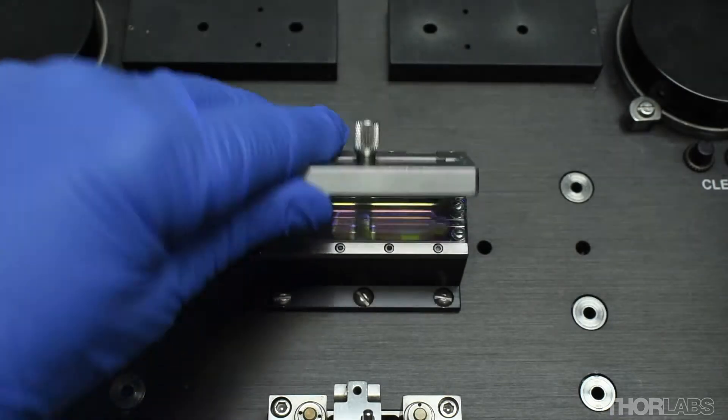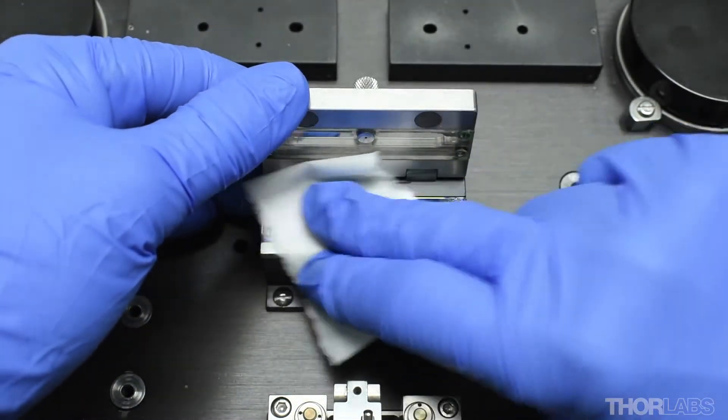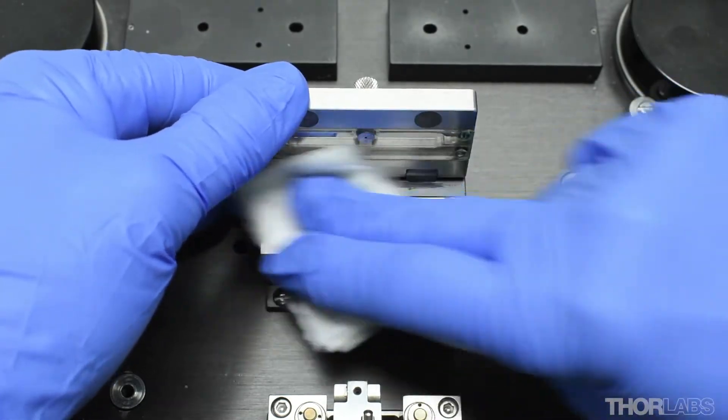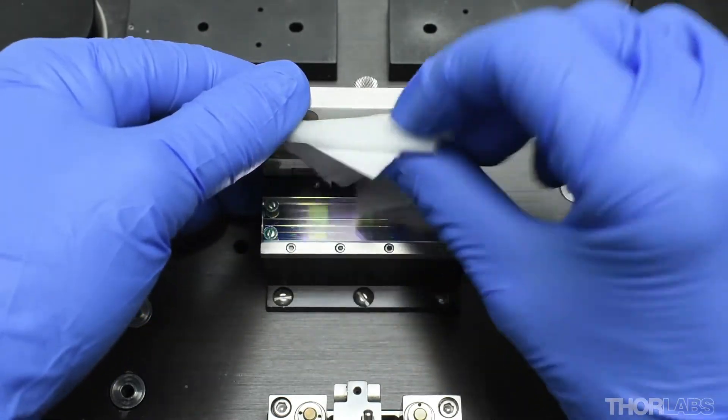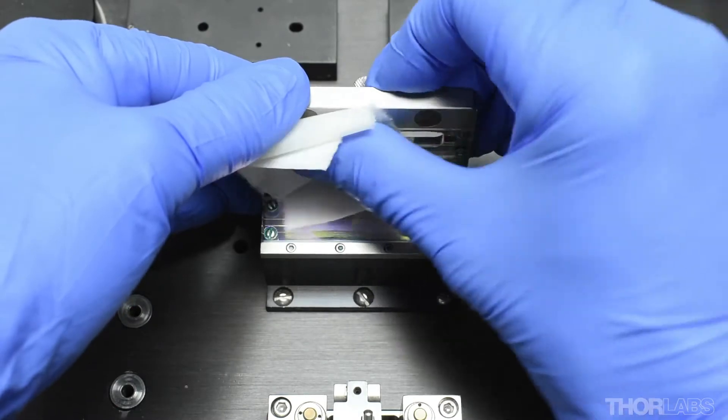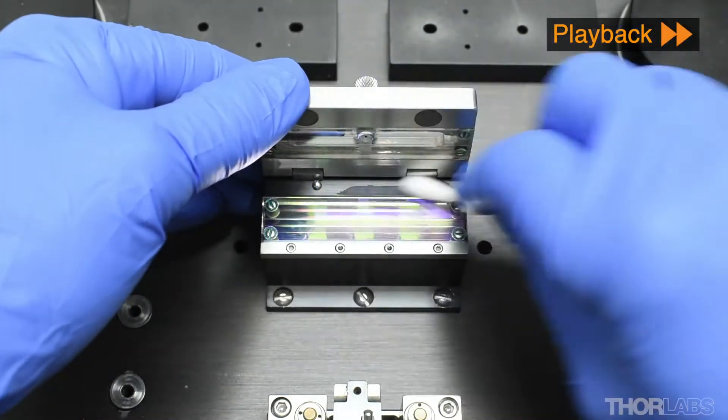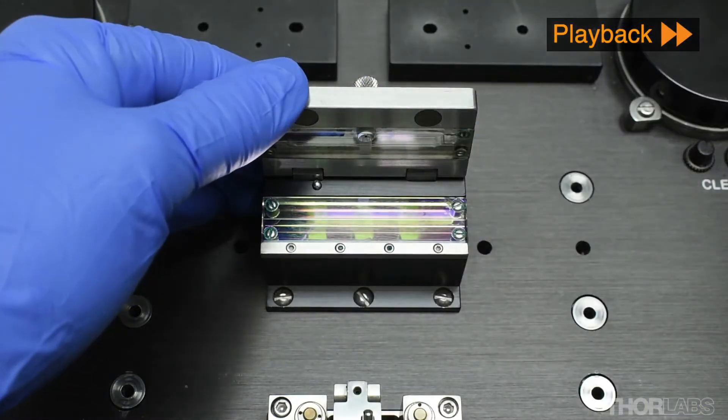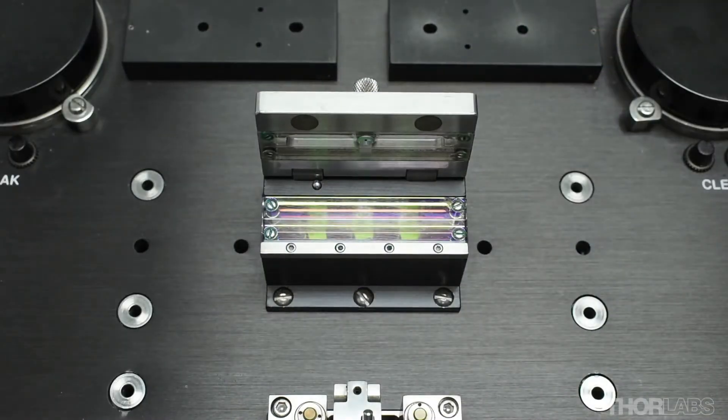Before performing a recoat, use a lint-free tissue and cotton-tipped applicators soaked in a solvent, such as acetone or IPA, to clean both the top and bottom mold plates. This will ensure that the surface of the plates and the channels are clean and free from debris and recoat material.